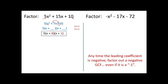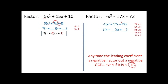For the second practice problem, notice we like our leading coefficient to be positive. Since there's a negative 1 in front, I go ahead and pull that out — don't forget pulling out a negative 1 changes all your signs. Then factor pairs of 72 are: 72×1, 36×2, 24×3, 18×4, 12×6, and 9×8. The only pair adding up to 17 is 9 and 8, so those are your factors.